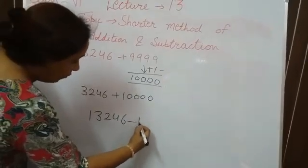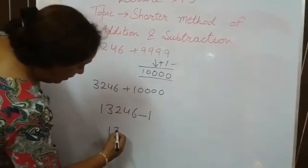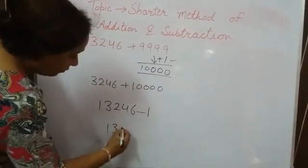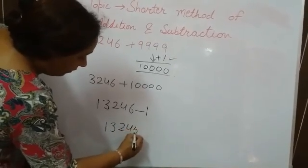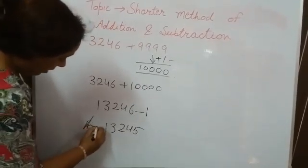Now here you added 1, so now minus 1, you got 13,245. So this is your answer.